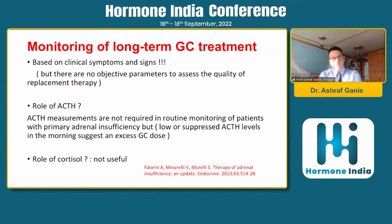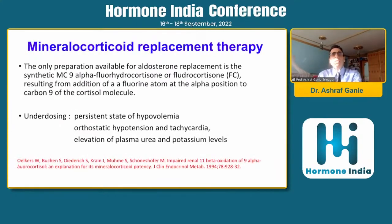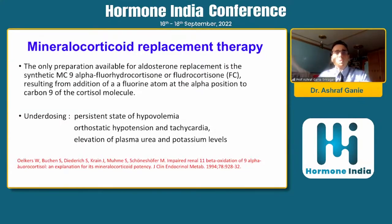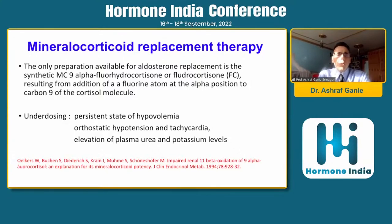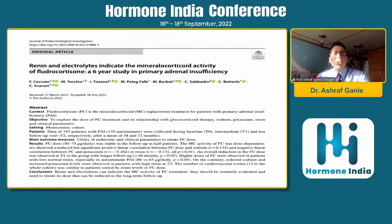For mineralocorticoid replacement therapy, the only preparation available is fludrocortisone — a synthetic 9-alpha fluorinated form of hydrocortisone. Its short half-life creates dosing challenges. Underdosing causes persistent hypovolemia, orthostatic hypotension, persistent tachycardia, and elevation of urea and potassium levels.